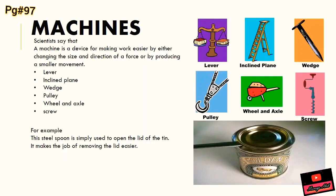Now we will study machines, page number 97. With the word 'machine' you might think of a refrigerator, washing machine, electrical appliance, or computer — but no. Scientists say a machine is a device for making work easier by changing the size and direction of a force, or by producing a smaller movement. The simple machines shown here are: lever, inclined plane, wedge, pulley, wheel and axle, and screw.